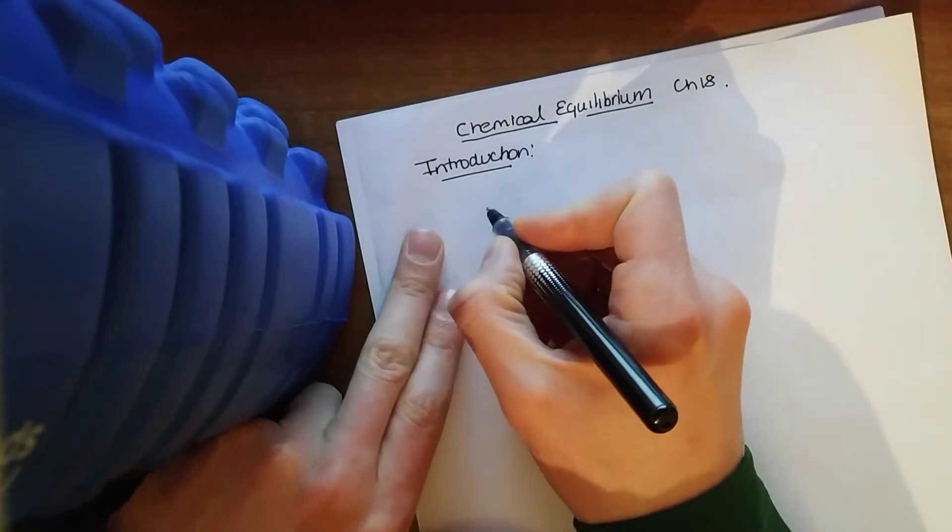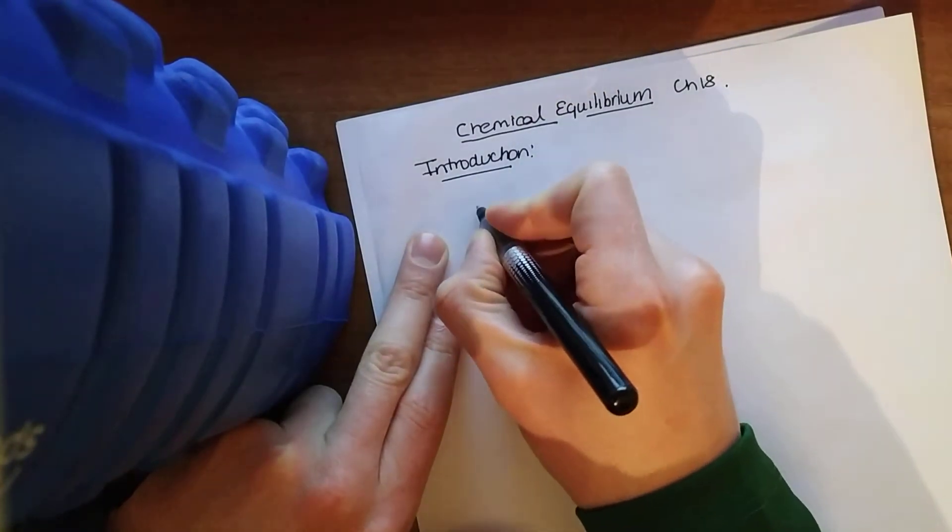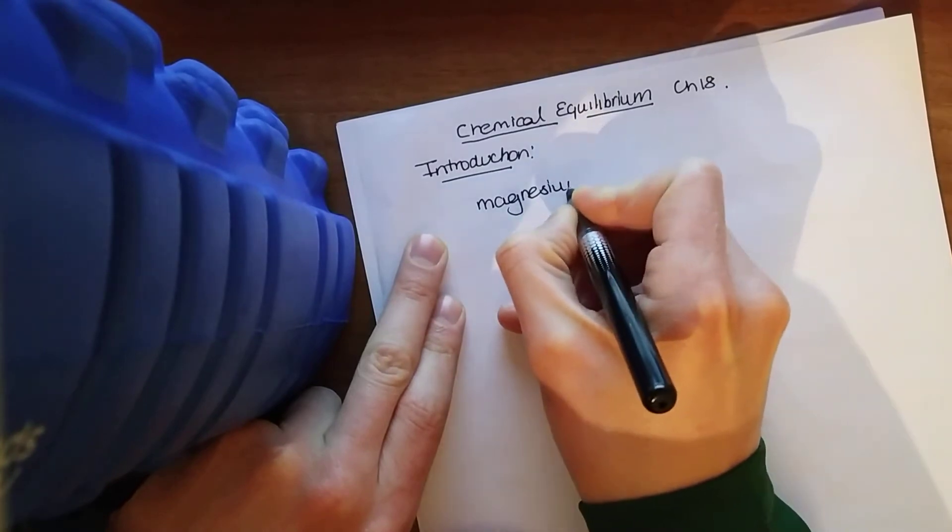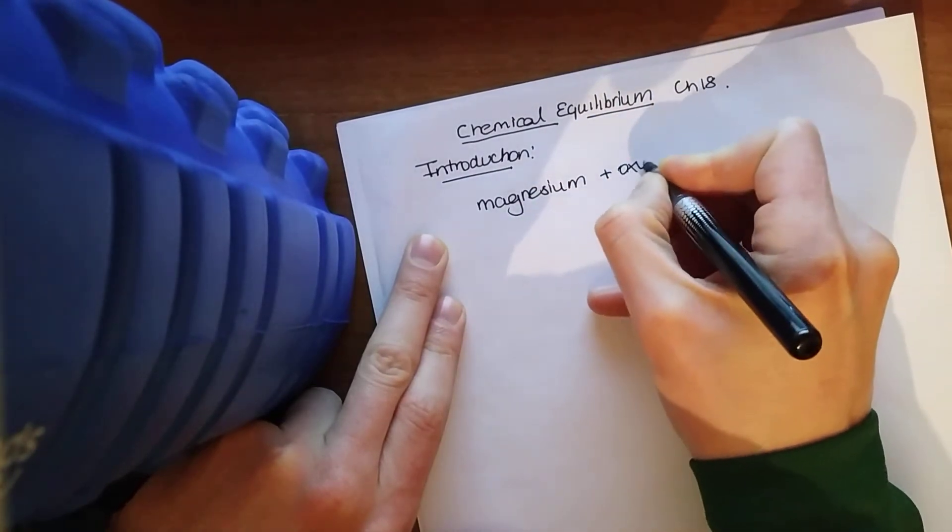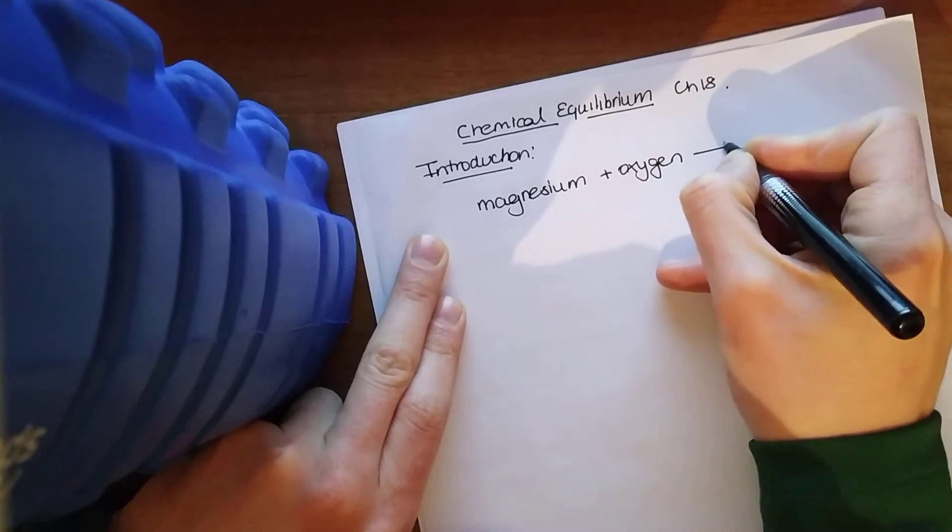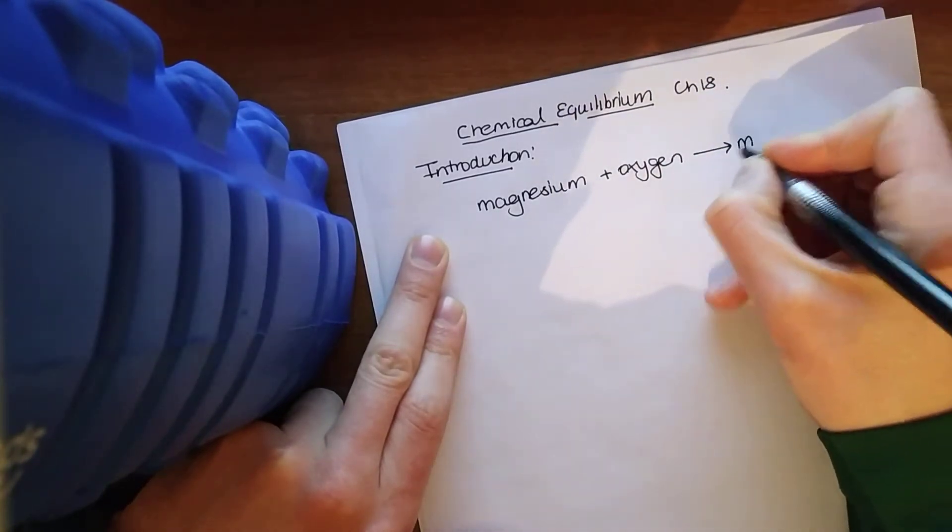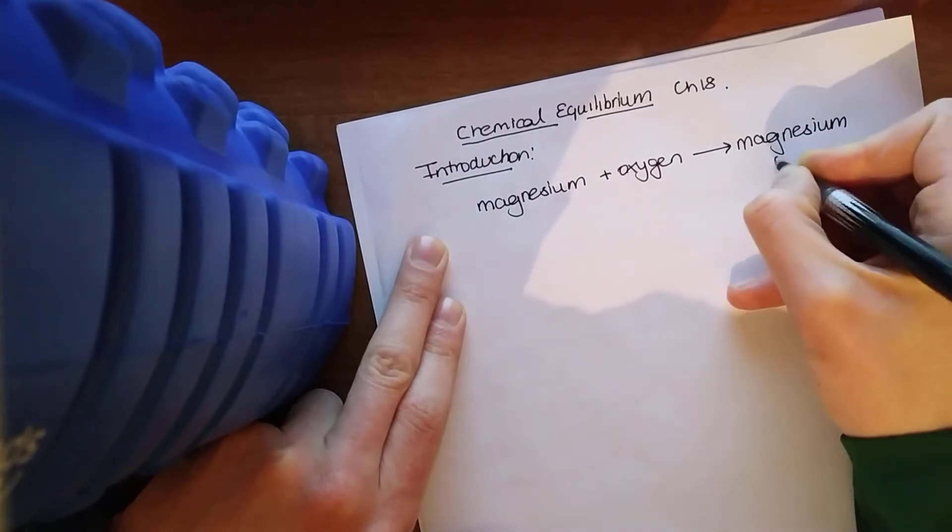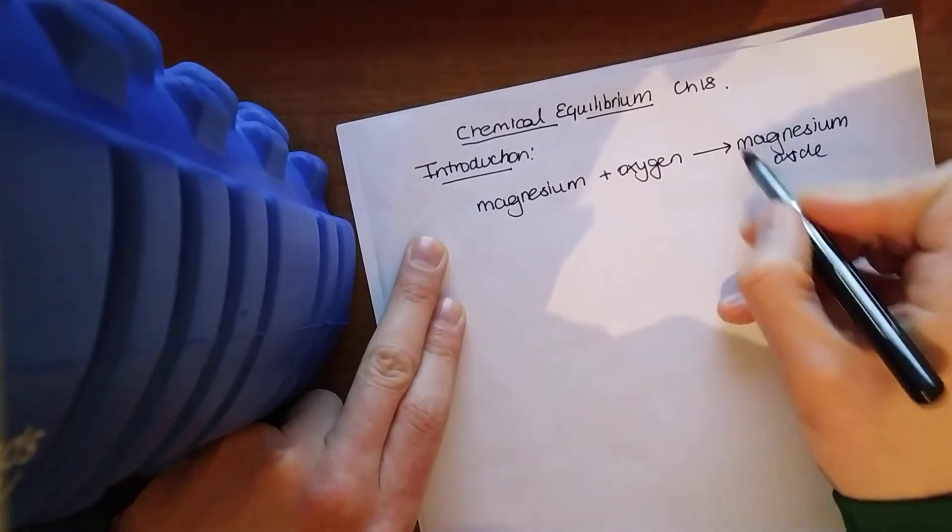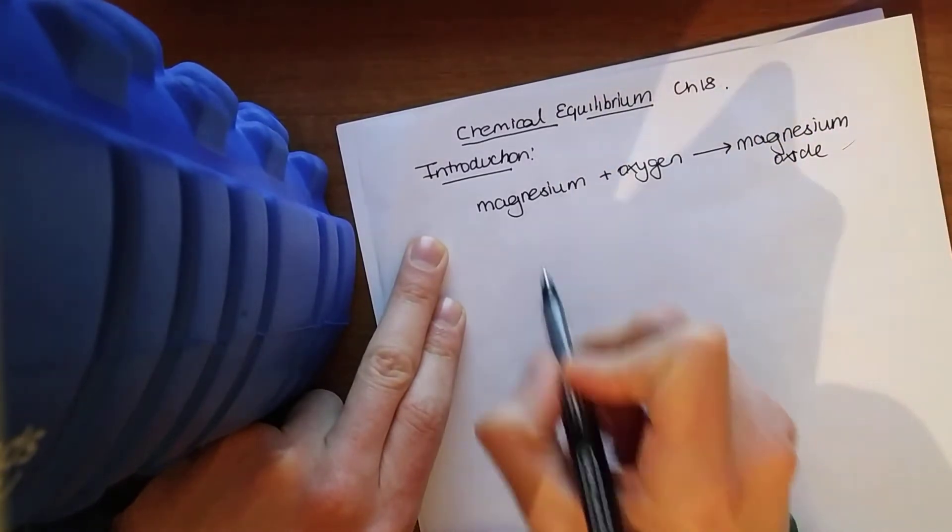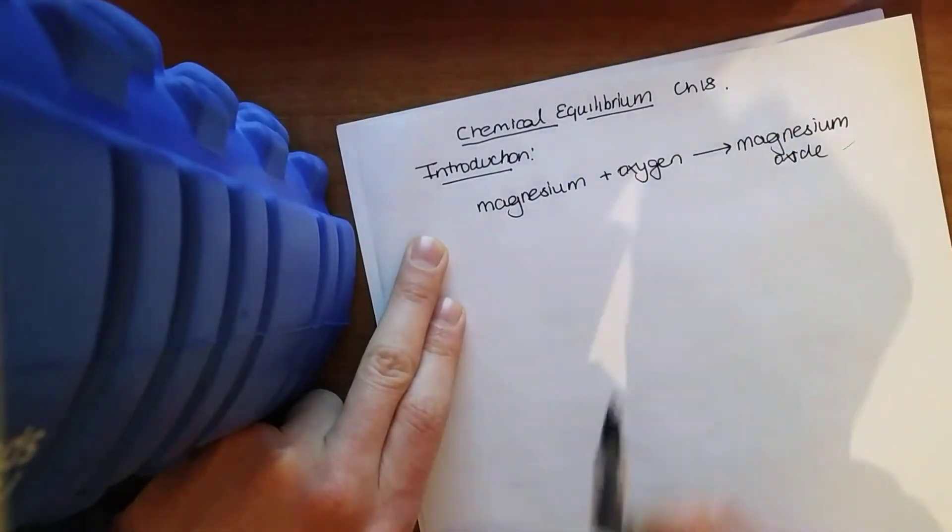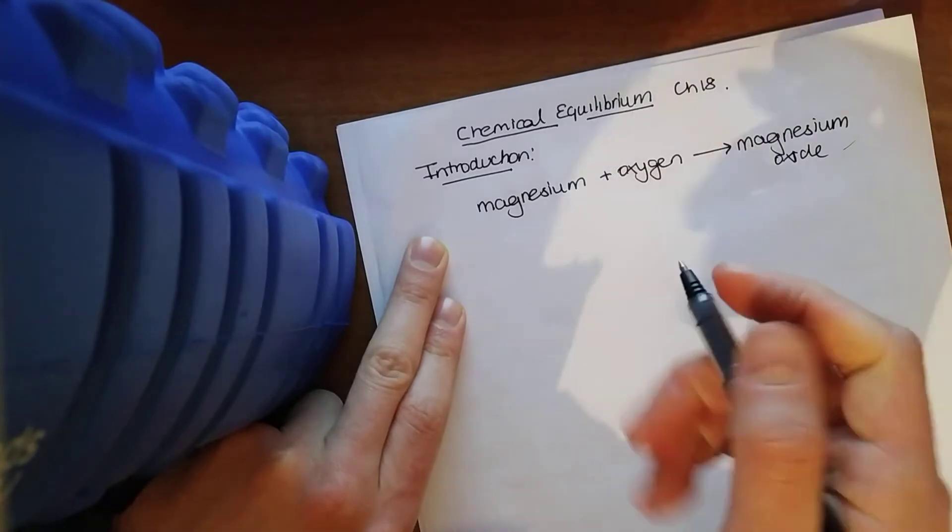I'll give you a wee quick summary. If we look at chemical reactions, say we had magnesium and we reacted that with oxygen. That reaction goes to completion, indicated by that arrow, and we form magnesium oxide. It's very difficult to turn that magnesium oxide back into the magnesium or back into the reactants. It's very difficult to turn the products back into the reactants.